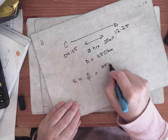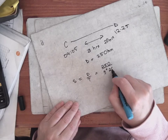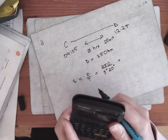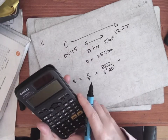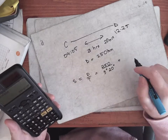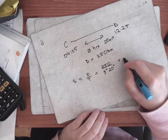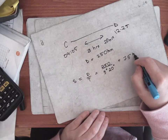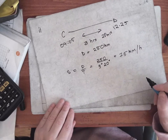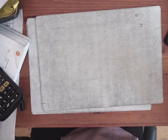Speed equals distance over time: 250 kilometers over 3 hours 20 minutes. Using the time button on the calculator so you don't have to convert to a decimal — 250 divided by 3 hours 20 minutes — gives 75 kilometers per hour. That's number eleven.